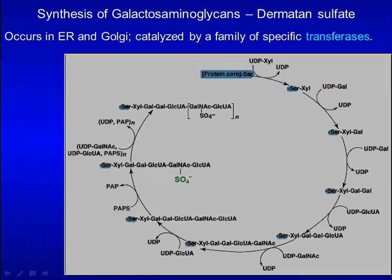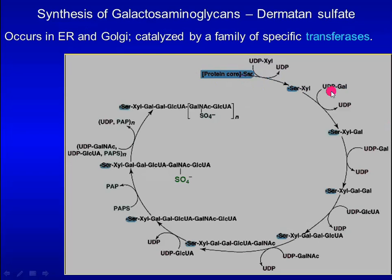This is CMP-N-acetylneuraminic acid, or CMP-NANA. Here, we use dermatan sulfate as an example to describe synthesis of a proteoglycan. It occurs in the ER and Golgi while the core protein is being synthesized in the rough ER. Xylose is transferred from UDP-xylose to the hydroxyl group of either serine or threonine residue of the core protein. Further transfer of two galactose molecules completes the trisaccharide linker.